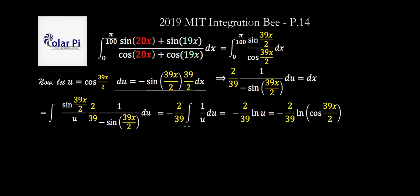And now this here is just the natural log of u, right? But we recall that u is cosine of 39 over 2x, so we call that back. And now that we're back to x, we can call back the limits of integration, and we do that.